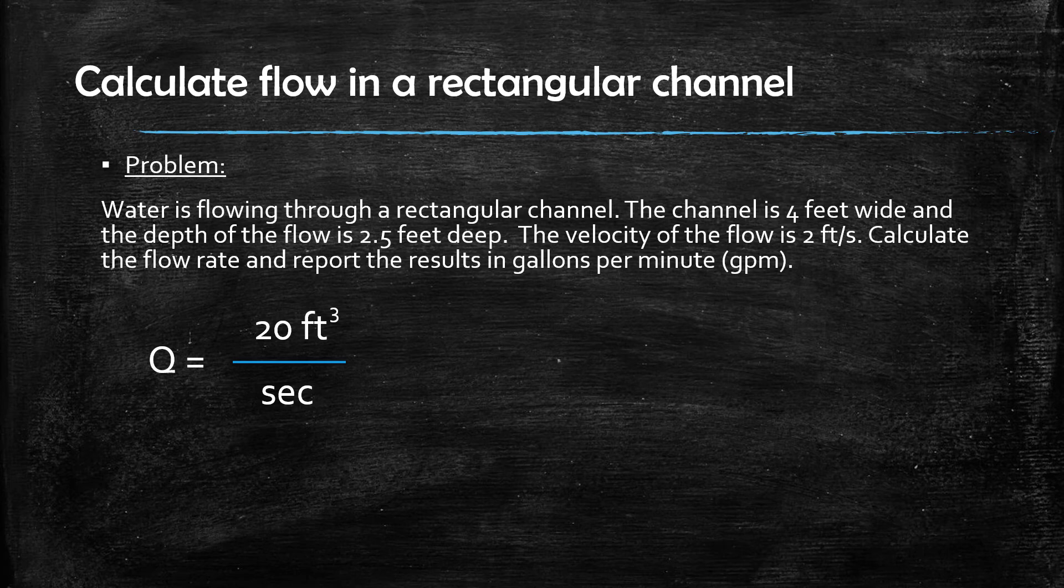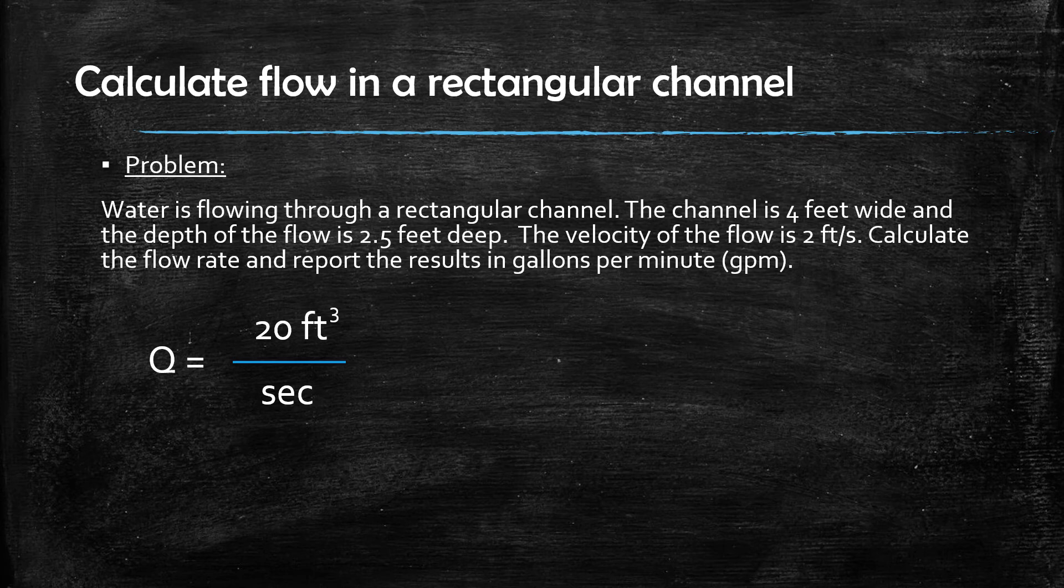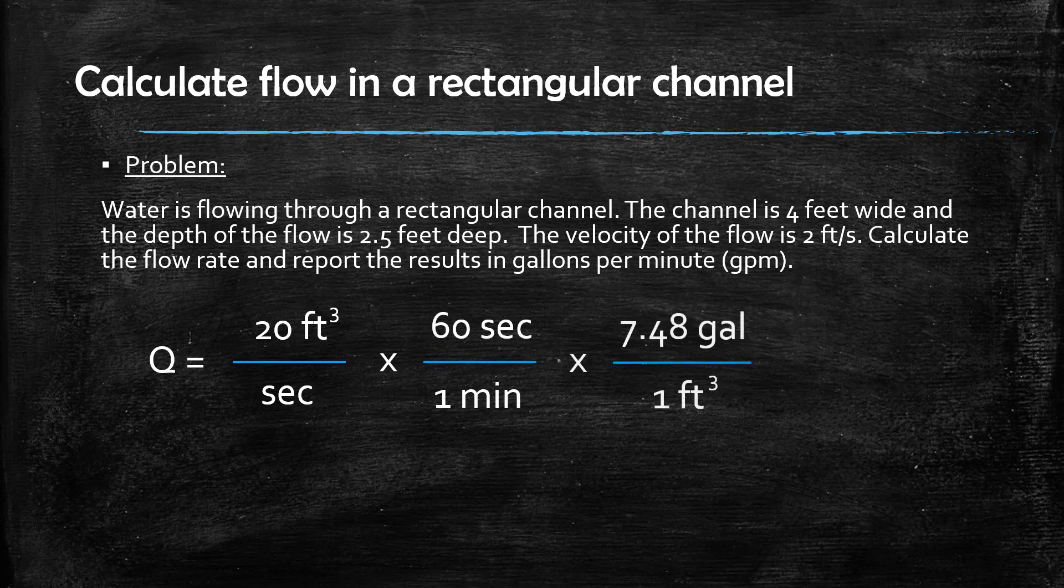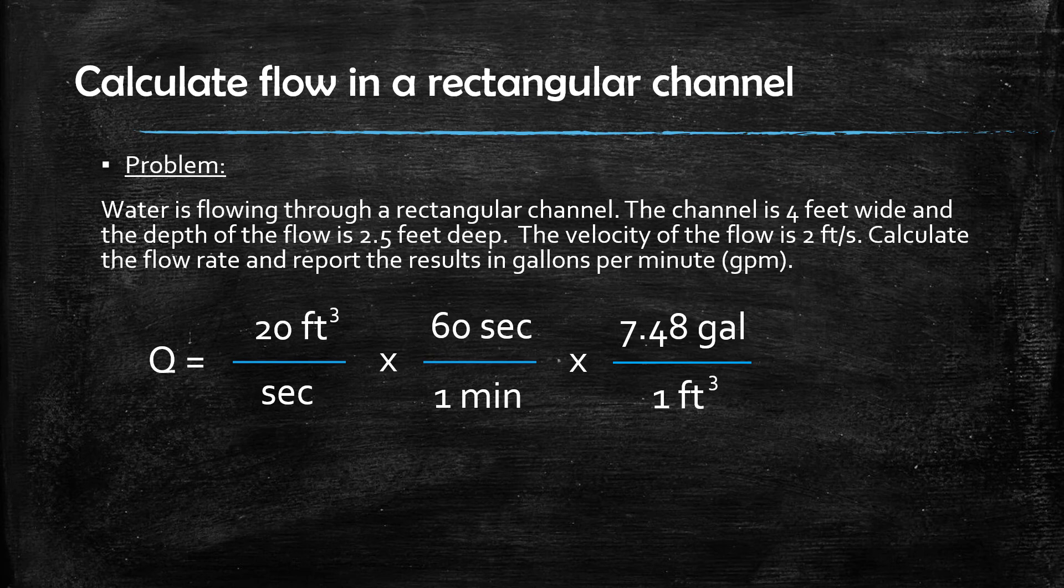You can accomplish this by taking the result we just calculated, 20 cubic feet per second, and multiplying it by 60 seconds per minute, and further multiplying it by 7.48 gallons per cubic foot.